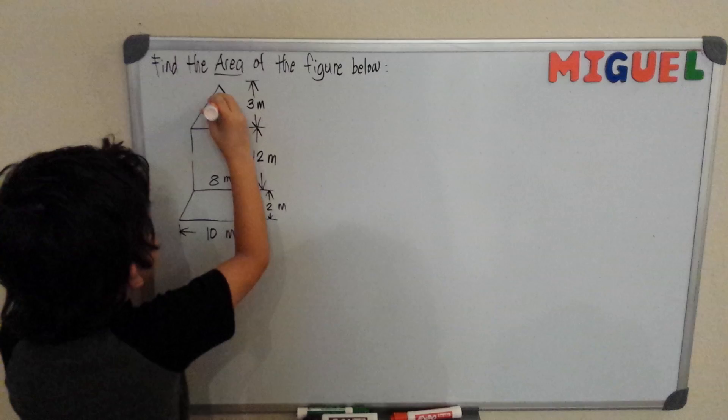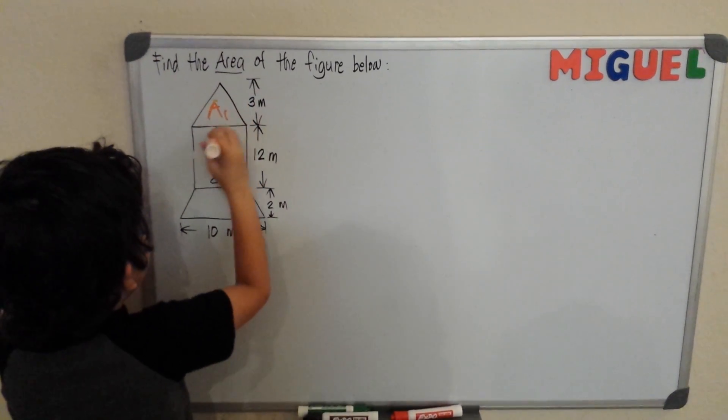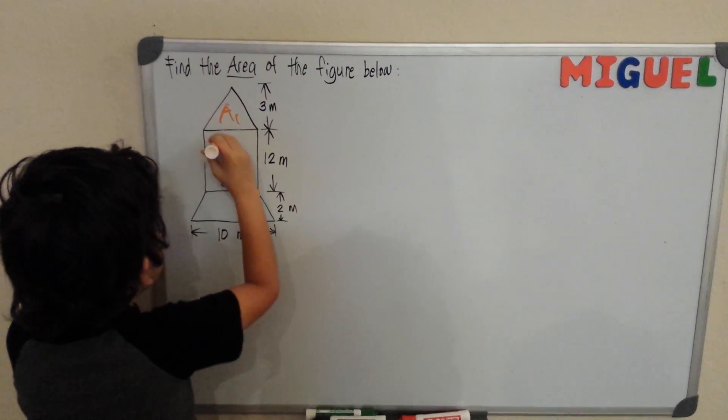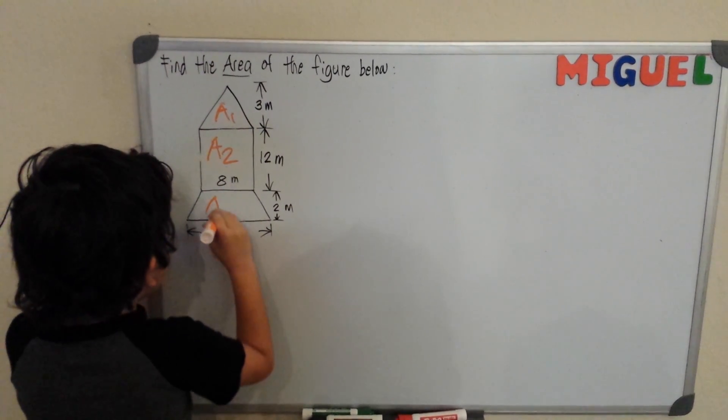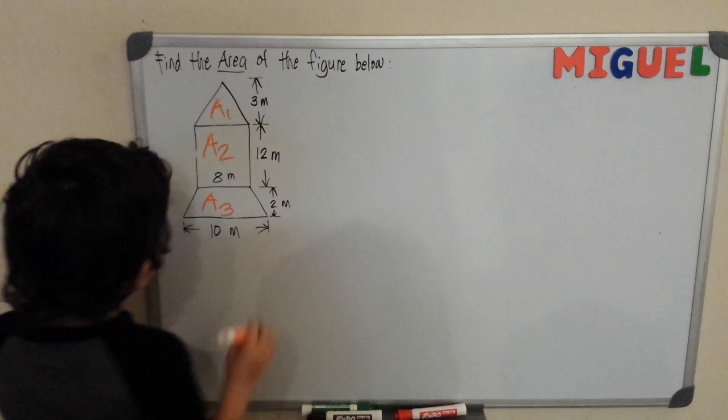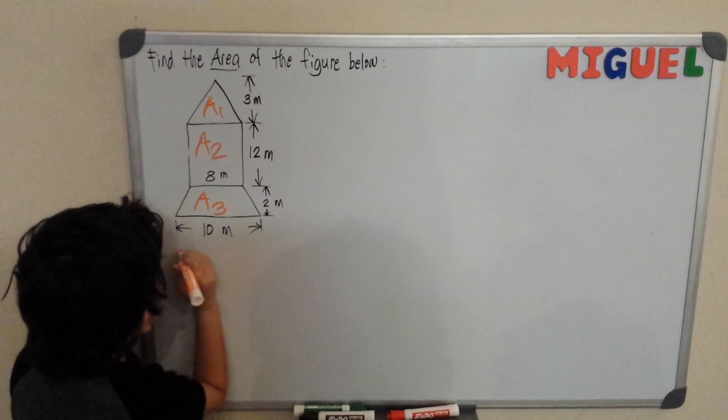Okay, this is our triangle, this is our rectangle, and this is our trapezoid.